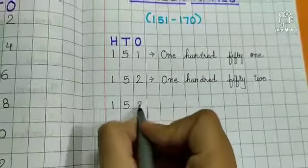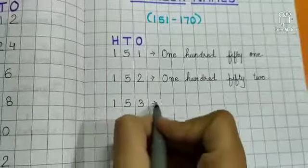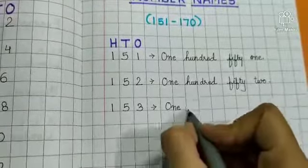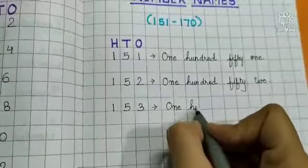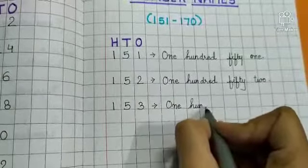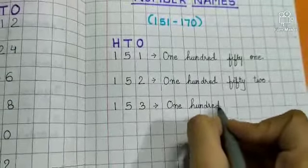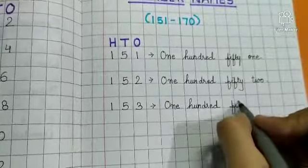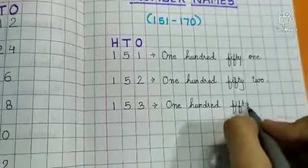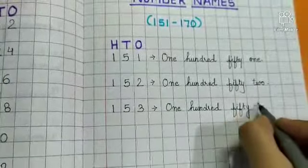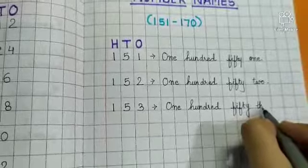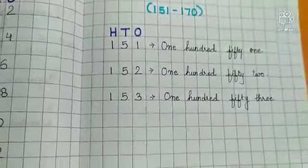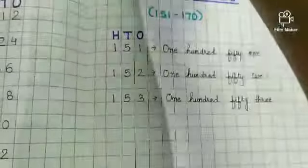Then 153. O-N-E 1, H-U-N D-R-E-D 100, F-I-F-T-Y 50, T-H-R-E-E 3. 153.